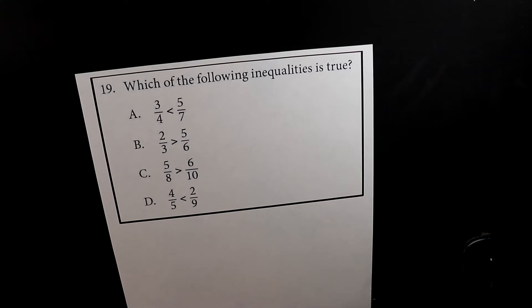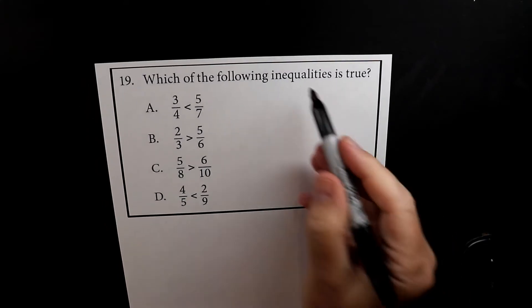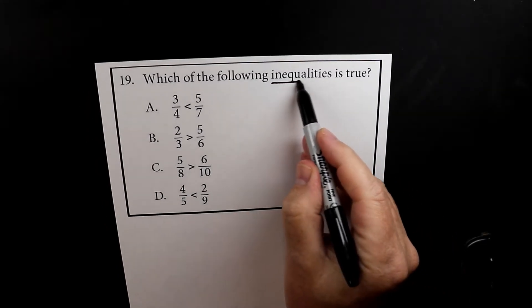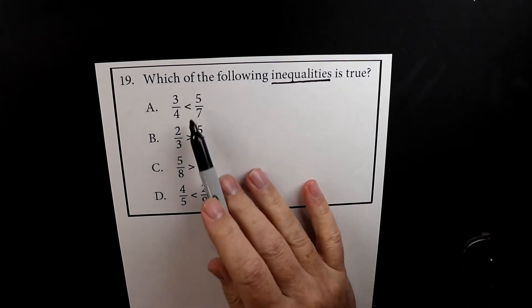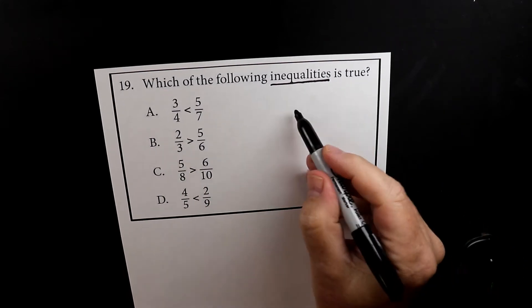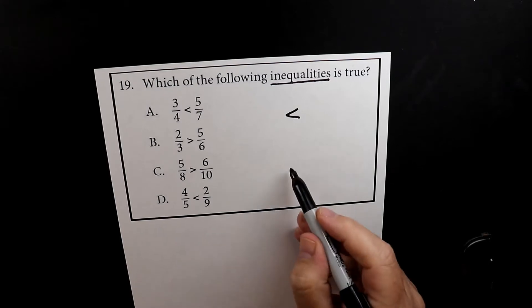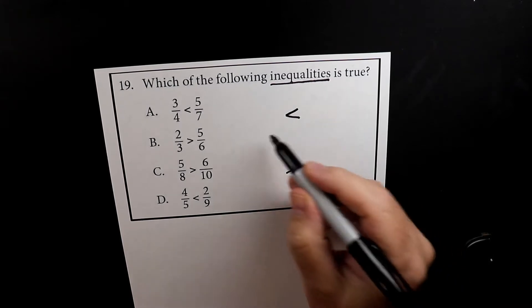This is number 19 of the first test, and this one we're going to be looking at inequalities. Here we have two symbols, less than and greater than.